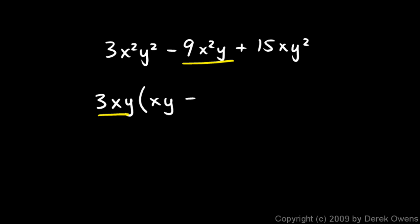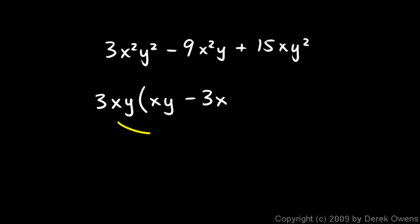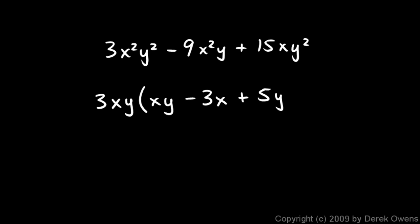Now 3xy times what gives me 9x²y? I need a 3, because 3 times 3 gives me 9. I have an x here and I need x squared, so I need one more x — that's 3x. And I already have the y, so that checks out: 3 times 3 is 9, x times x is x squared, and I have the y. Then 3xy times what gives me 15xy²? 3 times 5 gives me 15, I already have the x, and I need one more y — so that's 5y. Check: 3xy times 5y is indeed 15xy².